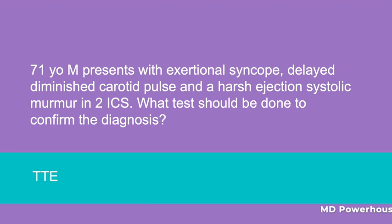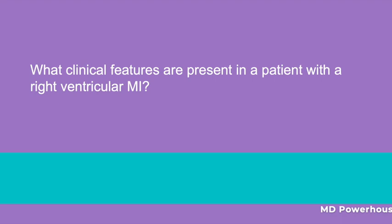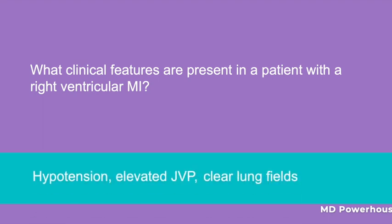What clinical features are present in a patient with a right ventricular MI? Hypotension, elevated JVP, and clear lung fields.